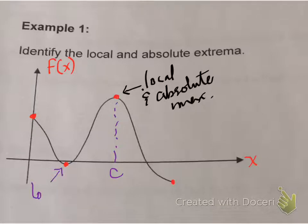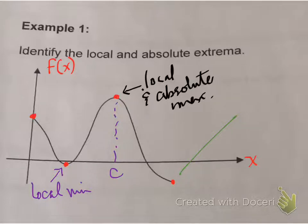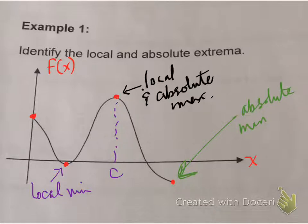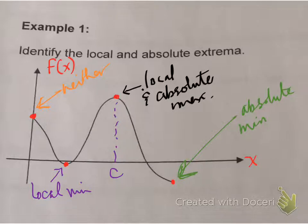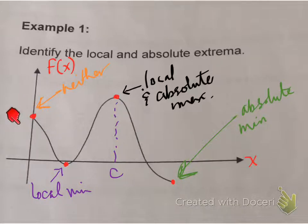Next, that point there is a local minimum — not an absolute minimum, because there's a point even lower than that. The endpoint pointed to with the green arrow is an absolute minimum; it can't be local because we don't see both sides. The first point, highlighted and arrowed in orange, is neither an absolute max nor an absolute min. Because it's an endpoint, we cannot determine a local extremum there, and it's not absolute because there's a value that's even higher.